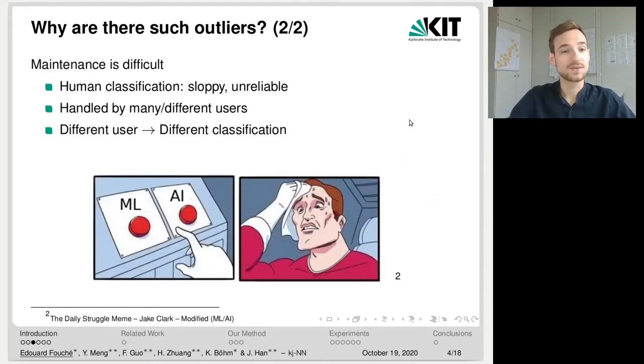The second reason is that the maintenance of such repositories is difficult because human classification is sloppy and unreliable in nature. Also, such repositories are handled by many or different users. And if you have different users, it also means that you often have different classifications even for the same article.